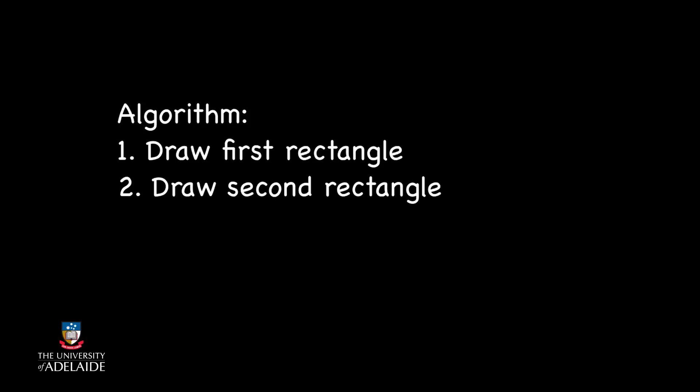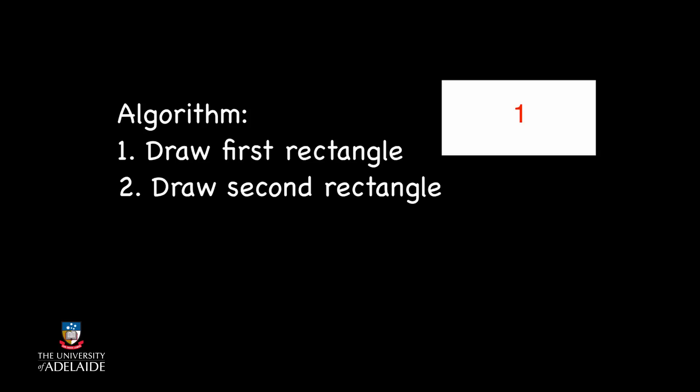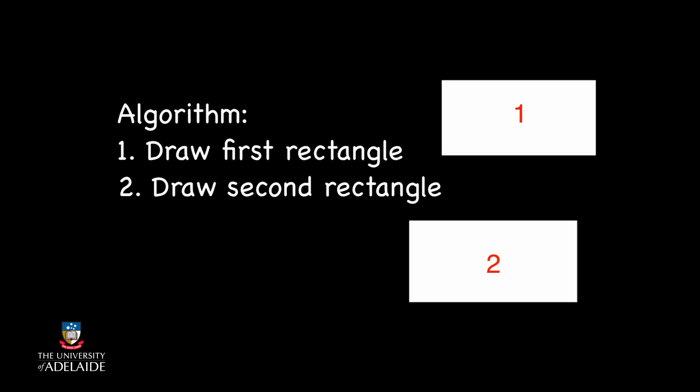Let's say we want to write a program that draws two rectangles. The algorithm for this is a sequence of two instructions, one for drawing the first rectangle and one for drawing the second rectangle. Before writing these, though, we will need to do some additional work.